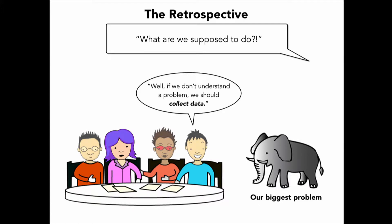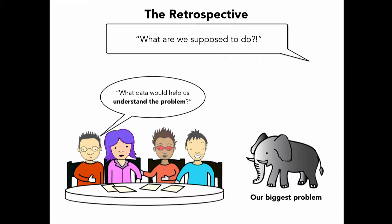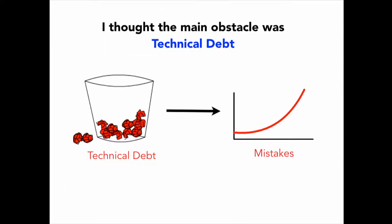We got in the retrospective and said, well, we're doing all the right stuff. One of my teammates said, if we don't understand a problem, we should collect data. So we started thinking about what data would help us understand the problems. I thought the main obstacle was technical debt building up in the code base, so I wrote a tool that could detect high-risk changes and let us know where we needed to do extra testing. But what I found wasn't what I expected at all.